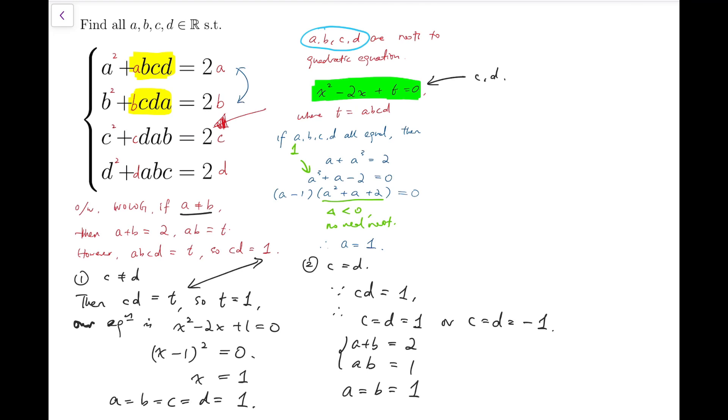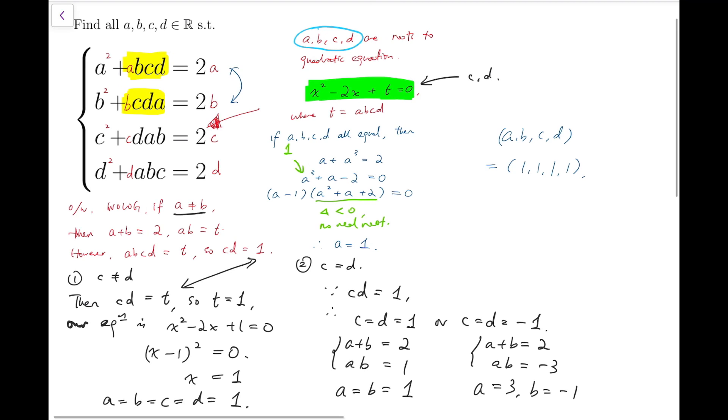Well for c and d to be both minus 1, if we do the same thing, we'll have a plus b equals 2, while ab this time is not 1 but equals to minus 3. So solving we'll have a equals 3 or b equals minus 1. Of course you can reverse the order. So all in all, we'll have solution sets for 1's or 3 and triple minus 1's of course and its permutations. So that's our final solution.